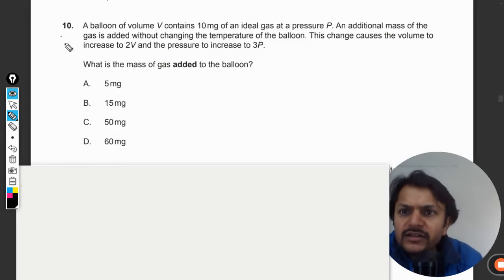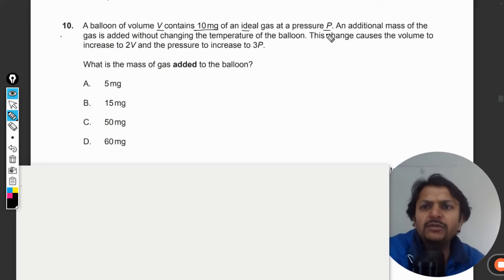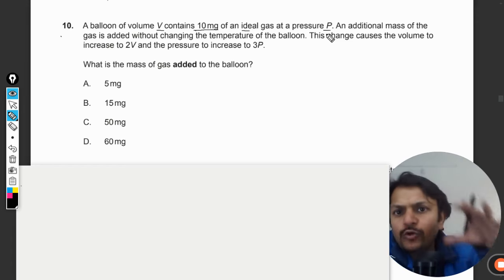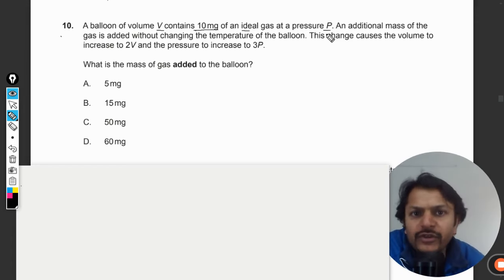Okay, dear students, let's see what is there in this question. A balloon of volume V contains 10 milligrams of ideal gas at pressure P. An additional mass of the gas is added without changing the temperature of the balloon. This change causes the volume to increase to 2V and the pressure to increase to 3P.